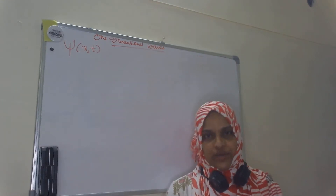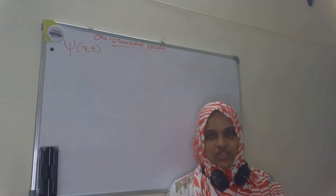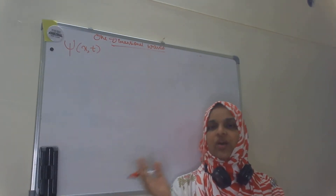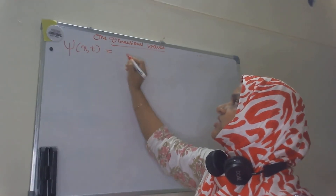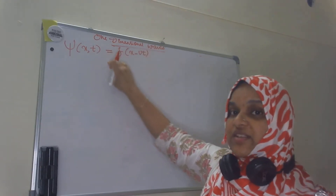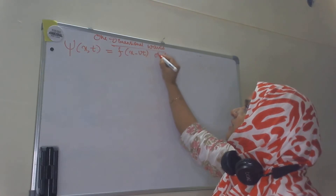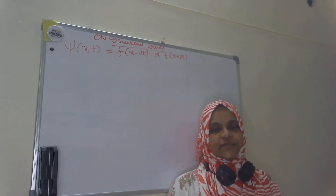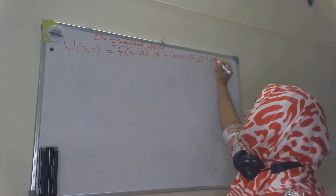Now, we have to represent a wave using a mathematical function. If you consider a one-dimensional wave passing through a one-dimensional medium moving along the positive x direction, such a wave can be represented using a function psi(x, t) = f(x − vt), which represents a wave travelling along the positive x direction. Or using a function f(x + vt) if the wave is travelling along the negative x axis. In general, we can use f(x ± vt).